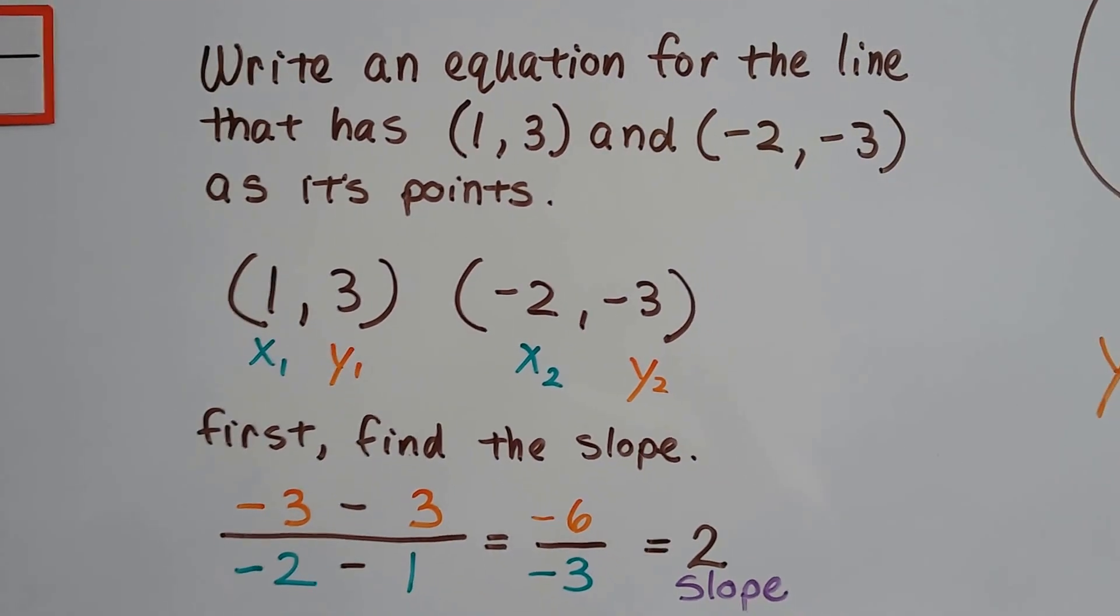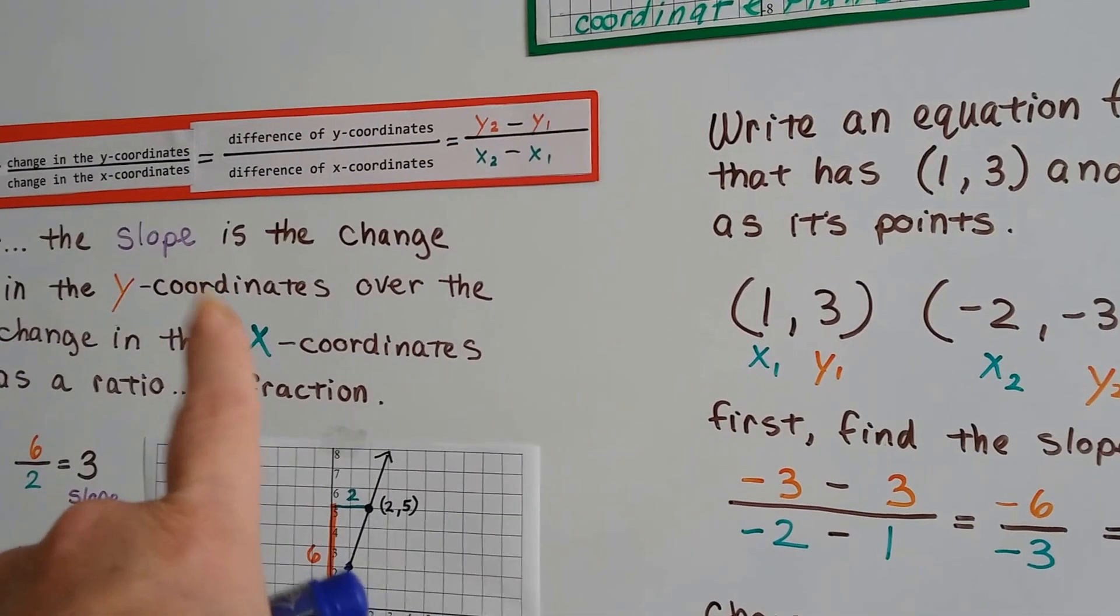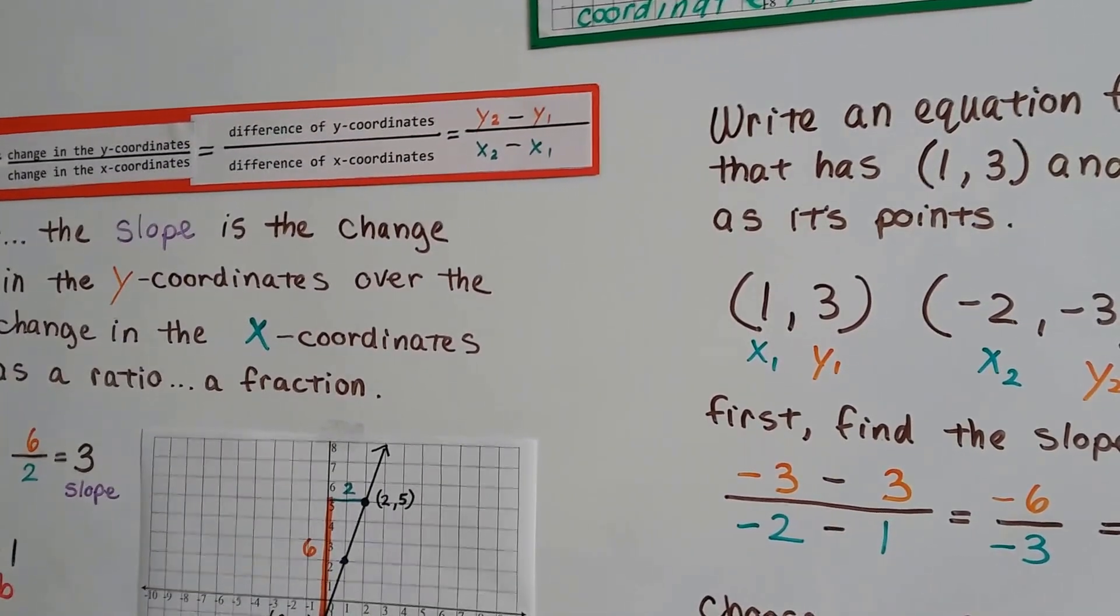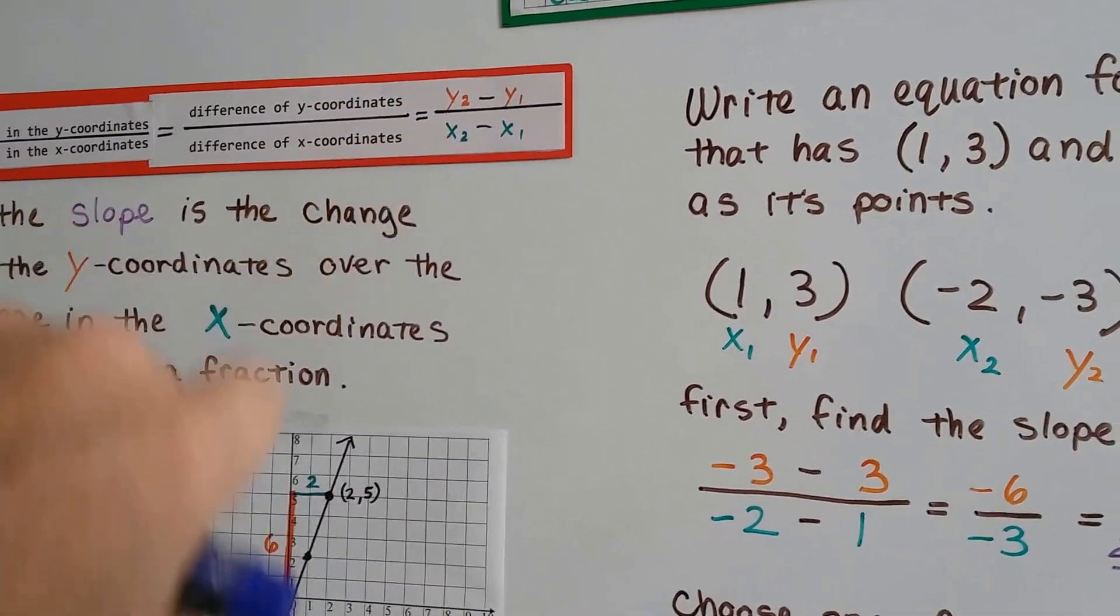So remember, we've got x1, y1, and x2, y2, and the slope is the difference of the y-coordinates over the x-coordinates.